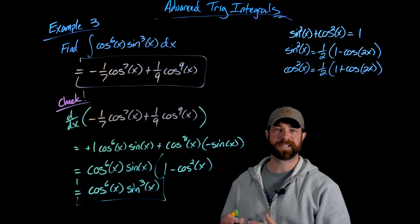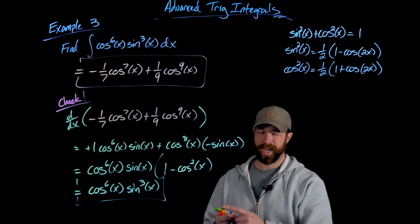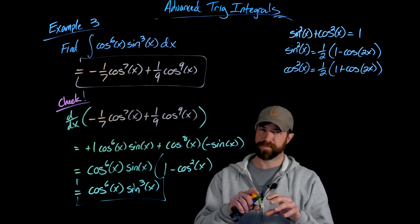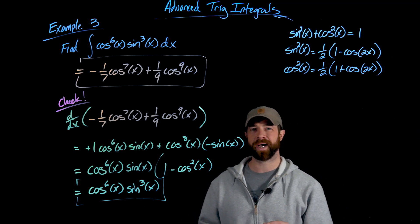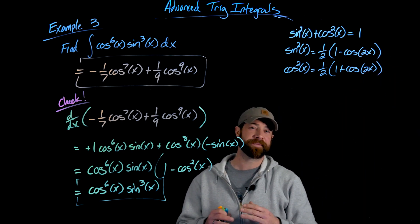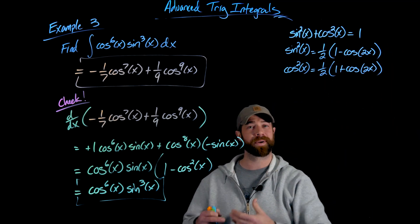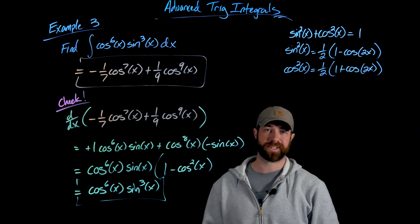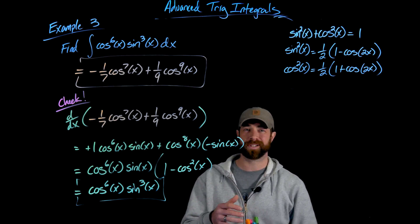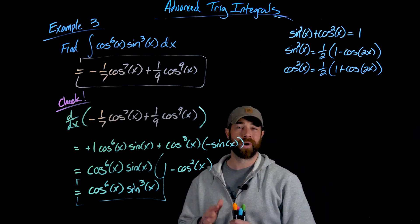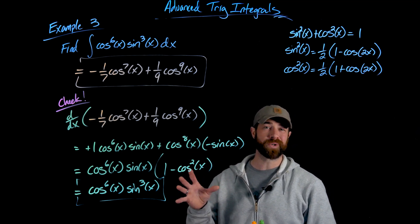These are the three general strategies. For odd powers, pull off one factor to get an even power times the factor you need for u-substitution. For even powers, use the power-reducing formulas repeatedly. You might also see a combination of power-reducing formulas and the Pythagorean identity. And it's not just sine and cosine — it can happen with other Pythagorean identities — though in applications like polar coordinates, spherical coordinates, and vectors, sine and cosine are the most used and these examples are the ones you really need to know.